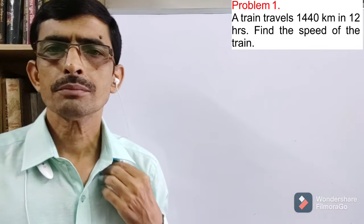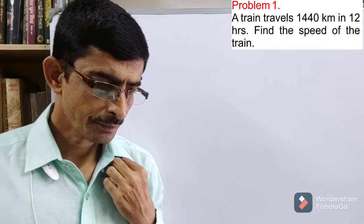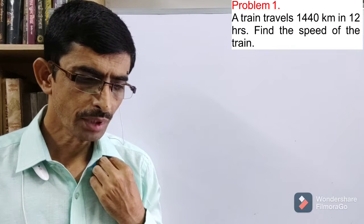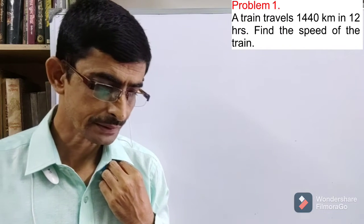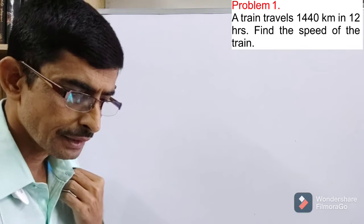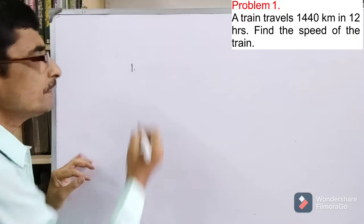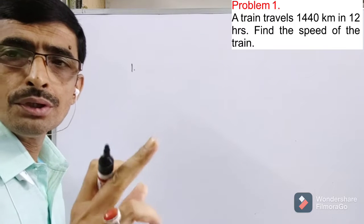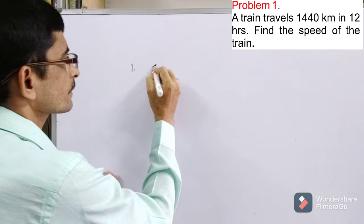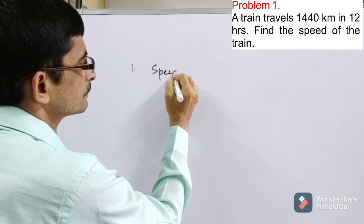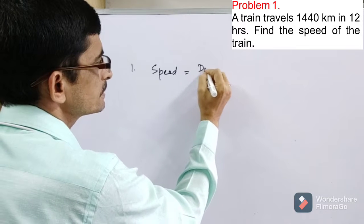So let us move to the board. We are in front of the board. Our problem says that a train travels a distance of 1440 kilometers in 12 hours. Calculate the speed of the train. So we will use the only one formula we know: speed is equal to distance